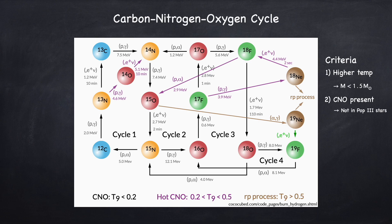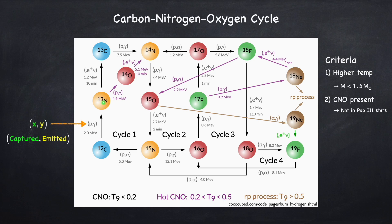Now let's get into the details of this diagram. Let's look at one of these reactions: carbon-12 converts into nitrogen-13. You can see here we have the details of a reaction in parentheses. The way you read this is the first species is what's being captured, and the second is what's being emitted. So in this particular case we're capturing a proton and emitting a gamma, which is a photon.